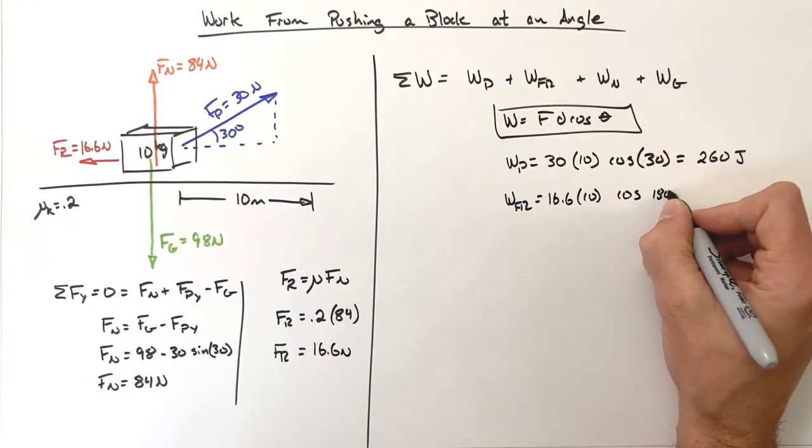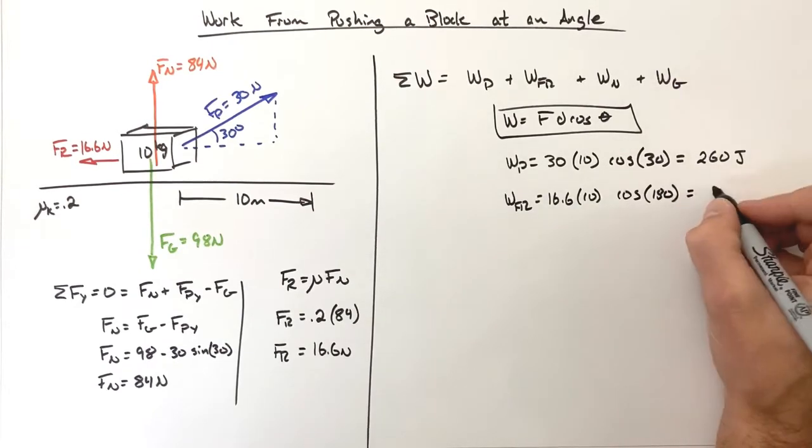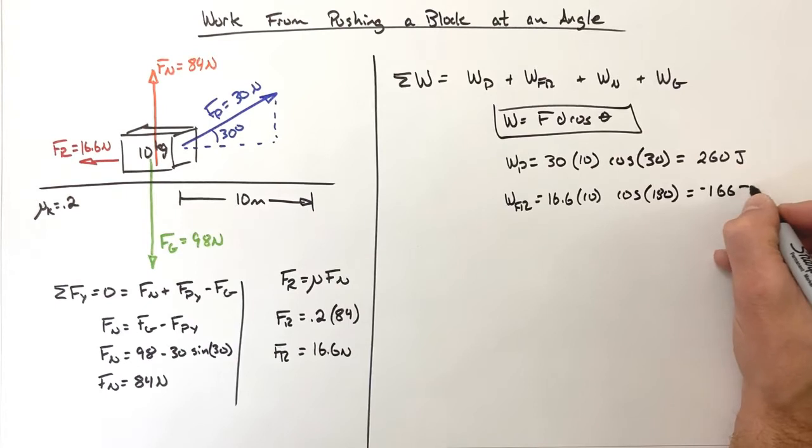So that's 180 degrees. That's going to give us a work done of negative 166 joules.